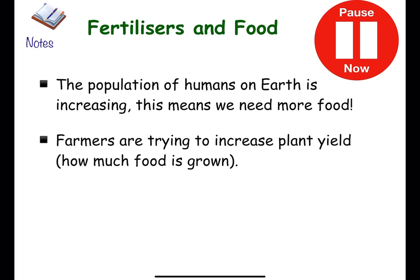The population of humans on earth is increasing and this means we need more food. Farmers are trying to increase plant yield, which is how much food is grown. Pause the video now and copy these notes.